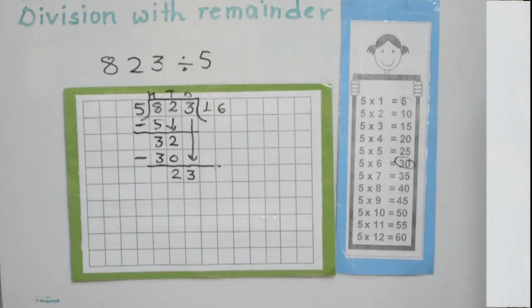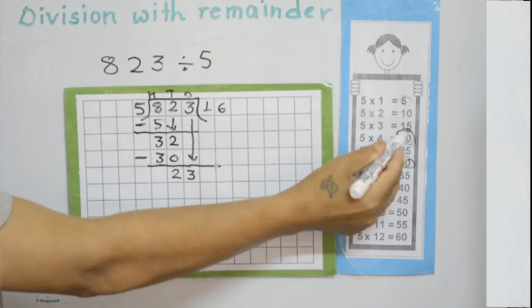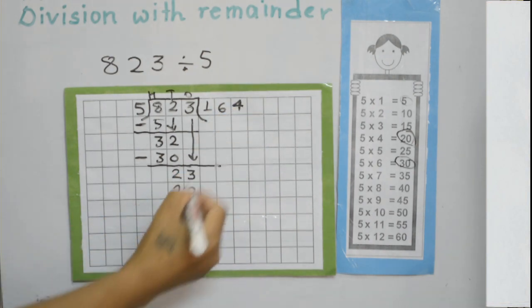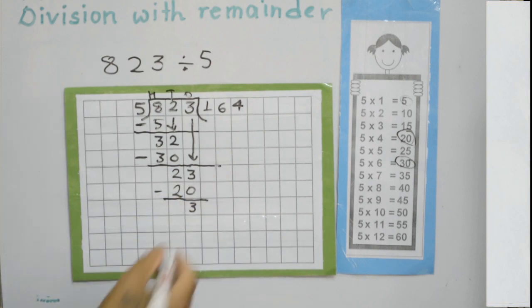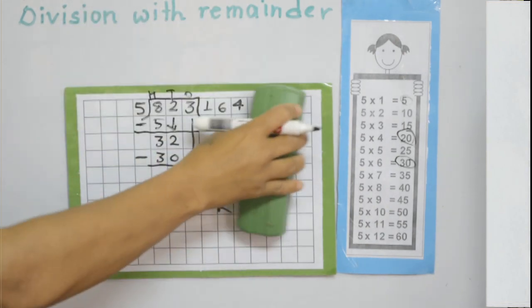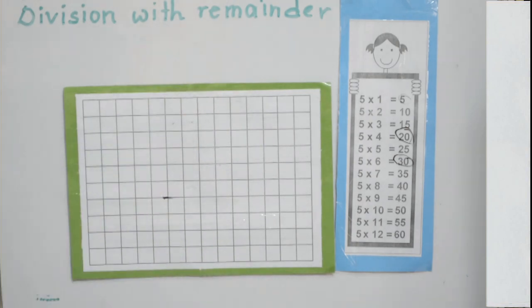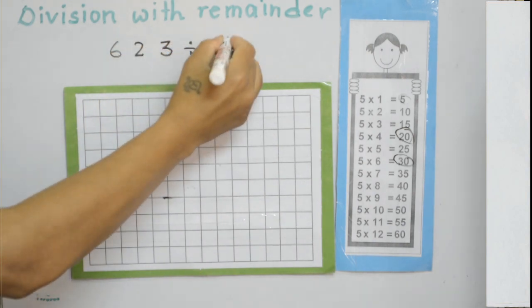Now we have a new number: 23. We don't have 23 as a multiple of 5, so the nearest number is 20. 5 times 4 is 20. Subtract: 3 minus 0 is 3, and 2 minus 2 is 0. So 3 is the remainder. Look at the next one.